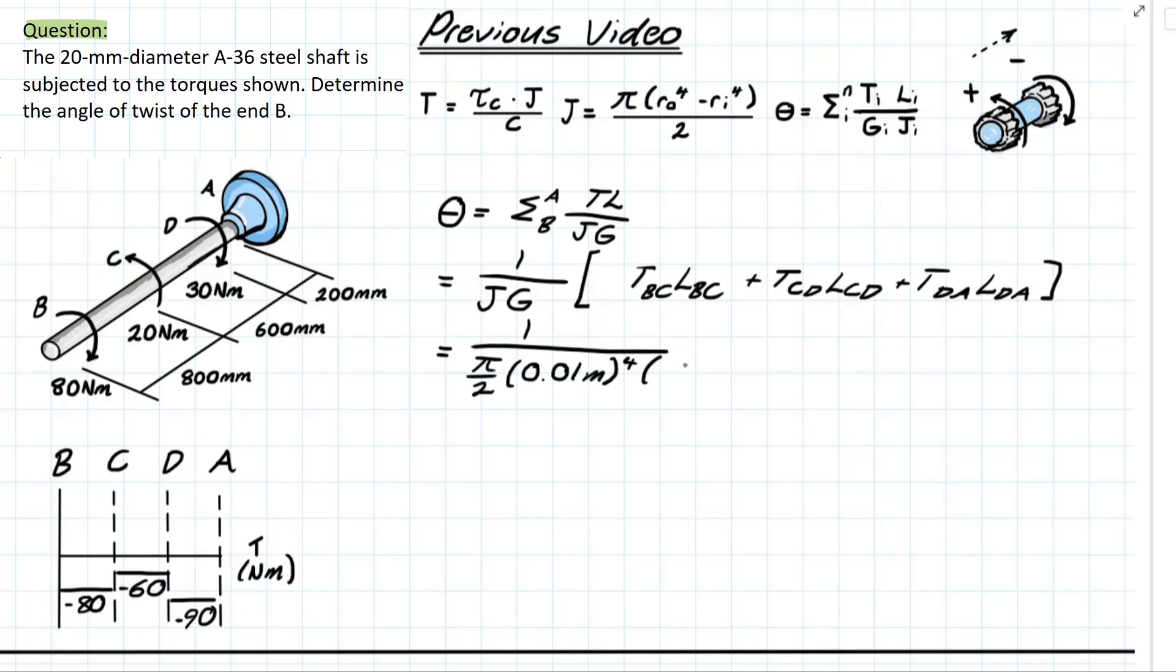And if you search up A36 steel shaft or steel you're going to come up with a value of 75 times 10 to the 9 newton meters squared